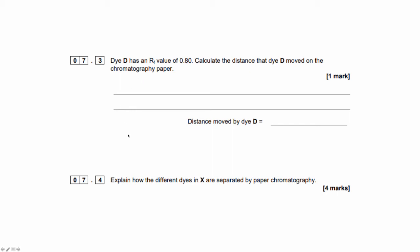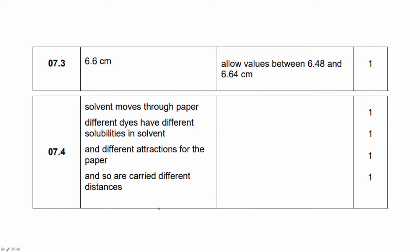Question 4 asks to explain how different dyes in X are separated by paper chromatography. And this wants 4 marks, so we're looking for an extended answer here. The things that it's looking for are that the solvent moves through the paper, that the different dyes have different solubilities in the solvent and different attractions to the paper. And therefore they're carried at different distances.